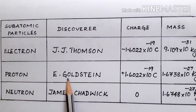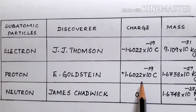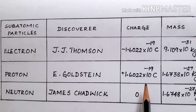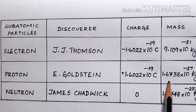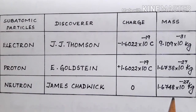Protons, which are positively charged, were discovered by Goldstein. They carry a charge of +1.6022 × 10⁻¹⁹ coulombs — equal in magnitude but opposite in sign to the electron. The mass of a proton is 1.6738 × 10⁻²⁷ kilograms, much heavier than the electron. Neutrons, discovered by James Chadwick, are neutral — they carry no charge — and have a mass of 1.6748 × 10⁻²⁷ kilograms.